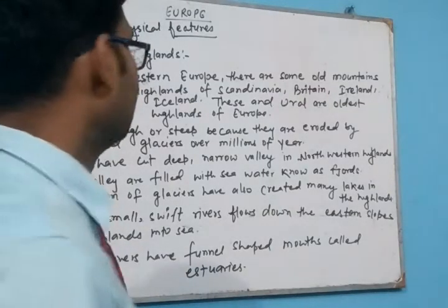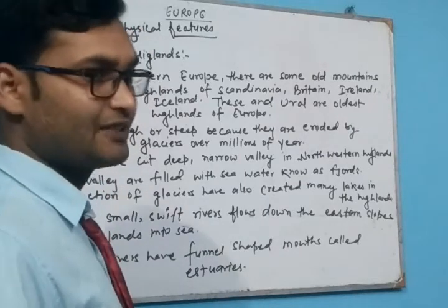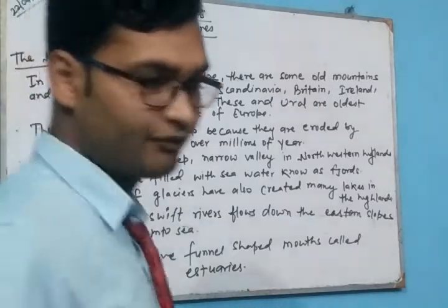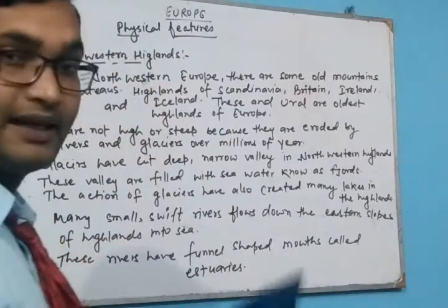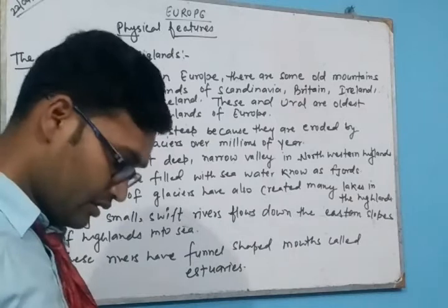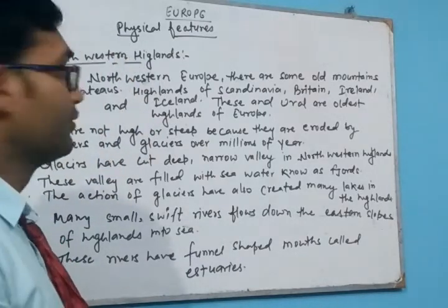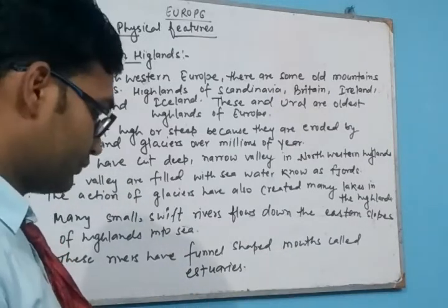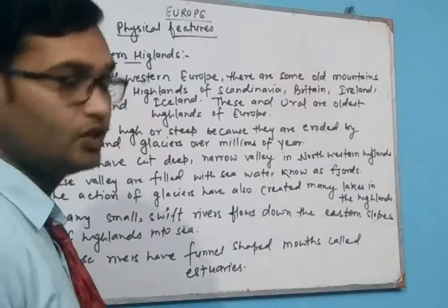Hello students, in this video we are going to talk about the physical features of Europe. We have divided Europe into four physical features: the North-Western Highlands, Central Lowlands, Central Uplands, and Alpine Mountains. We will discuss them one by one.